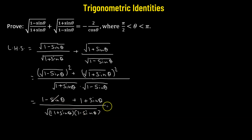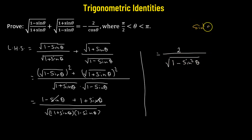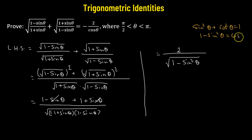Now negative sine theta and positive sine theta cancel out. So in the numerator we have 2, divided by — underneath the square root — 1 minus sine squared theta. Now we know that sine squared theta plus cosine squared theta is a standard identity equal to 1, so 1 minus sine squared theta equals cosine squared theta.